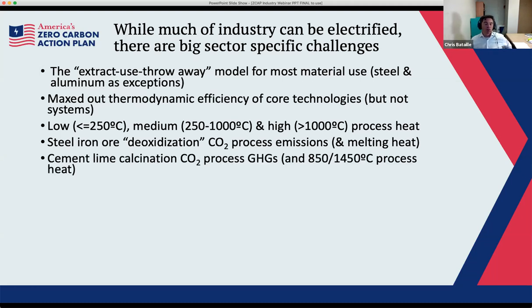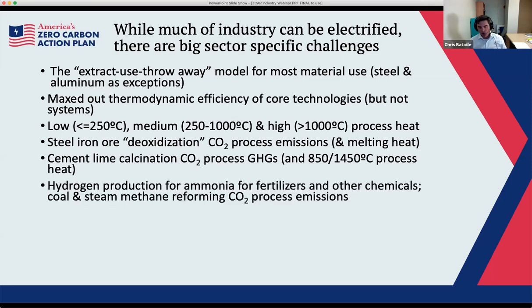The other big material cement is made from limestone — we heat it, CO₂ comes off, creating quicklime or calcium oxide, which is combined with other materials as the precursor to cement, and that CO₂ goes into the atmosphere. Hydrogen production for ammonia — for fertilizers and other chemicals — is a key feedstock for much of the chemicals industry. Probably two-thirds of the people on this webinar would not exist today without hydrogen made from coal or methane, transformed into ammonia and then into urea for fertilizers.